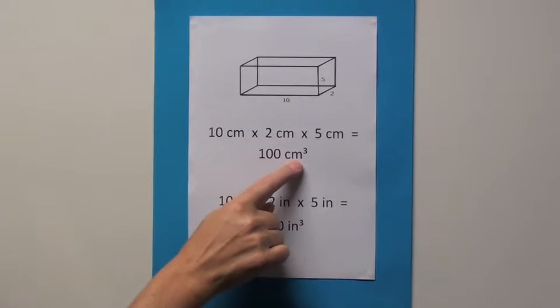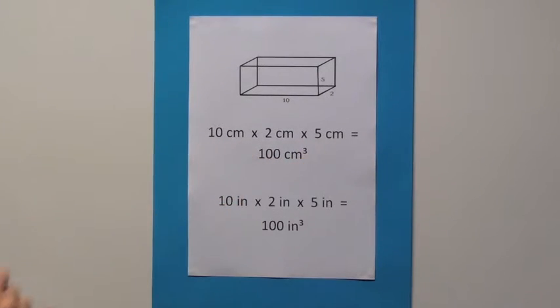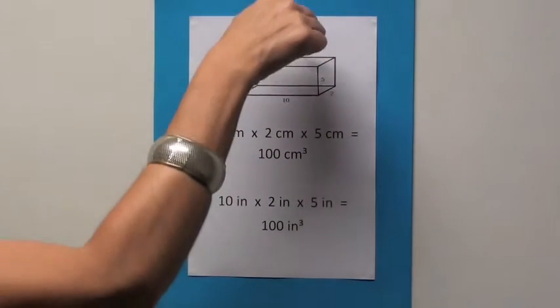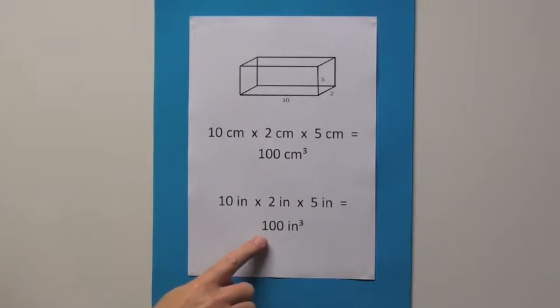In this example, 100 centimeters, but we must have the little 3, which means 100 centimeters cubed. And this is because we're looking at three dimensions: length, width, and height or depth. And here we can see if we're measuring in inches, the same answer, 100 inches cubed.